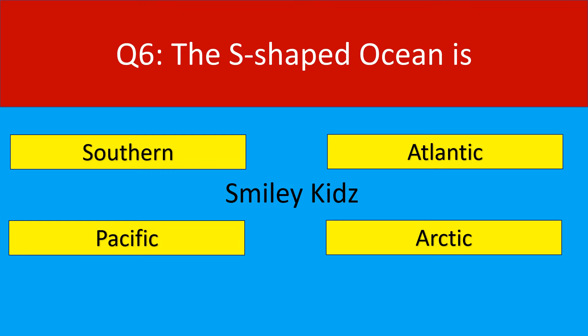Question number 6. The S-shaped ocean is. Options are: Southern, Atlantic, Pacific, Arctic.